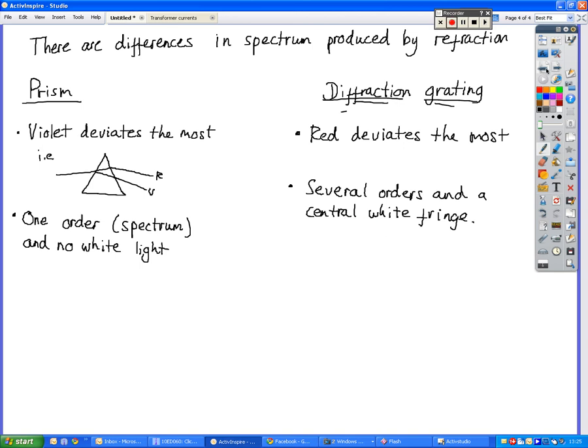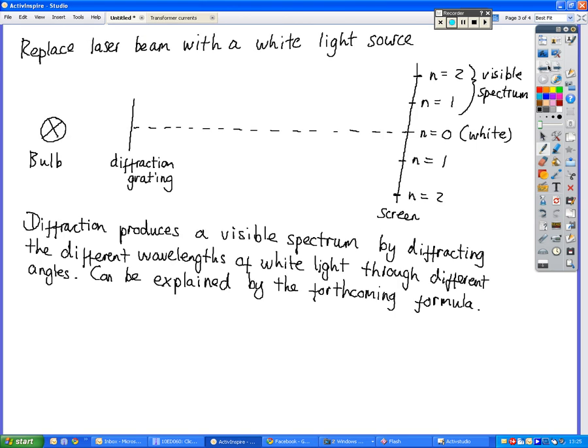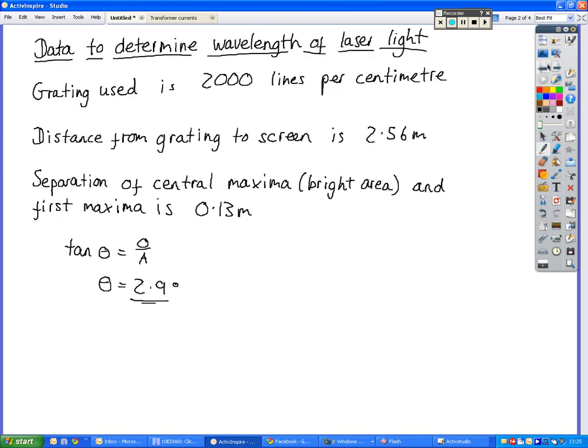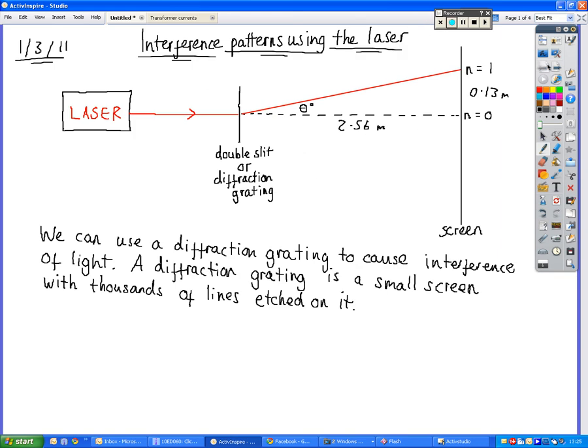So looking at the diffraction grating, a diffraction grating can be used to cause interference. That interference happens because we've got the light being split up, going through different little spaces in the diffraction grating. And as we'll see, that creates something that's called a path difference. In other words, one ray of light has to travel further than the other, so that's why they end up in phase or out of phase with each other.